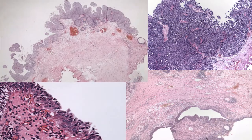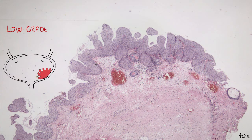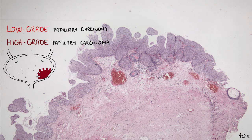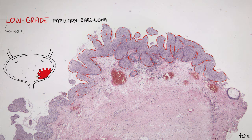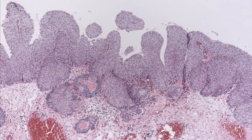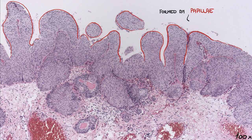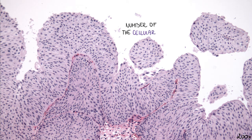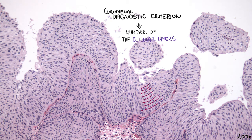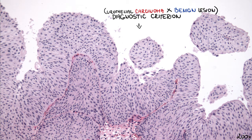Now let's discuss the microscopic appearance. First, we need to stress that both low-grade and high-grade papillary carcinomas, despite being called carcinomas, are non-invasive in situ lesions. On the picture, you can see low-grade papillary carcinoma with no signs of invasive growth. The border between epithelium and stroma is smooth, and the basement membrane is intact. This type of urothelial carcinoma is formed by papillae covered by several layers of urothelial cells. Previously, the number of cellular layers was a diagnostic criterion for distinguishing urothelial carcinoma from benign lesions, but this criterion is no longer valid. Nowadays, urothelial carcinoma is recognized according to the presence of cytological and architectural atypia.